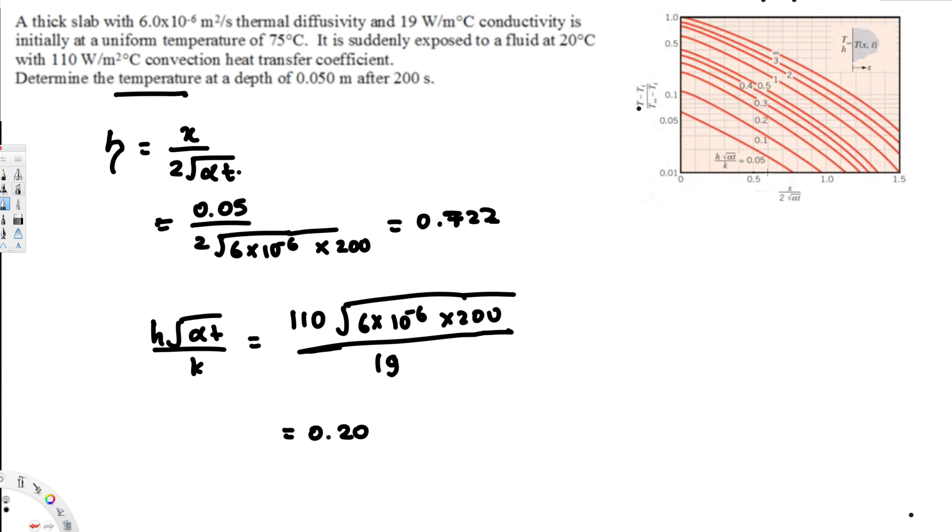So 0.722 means this is 0.5, 0.6, 0.7. So 0.722 is going to be somewhere along here, and this value is 0.2, so this is this line right here.